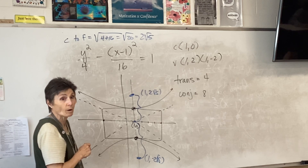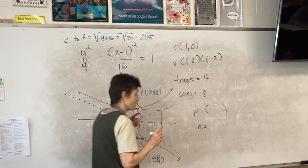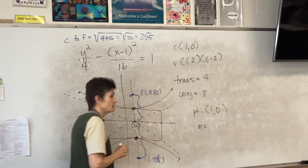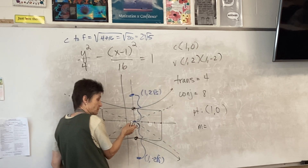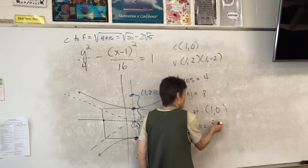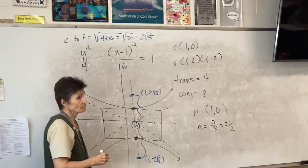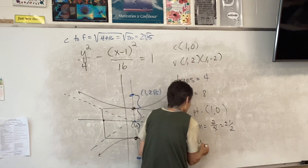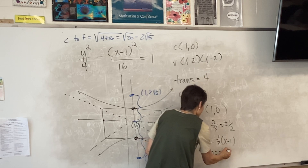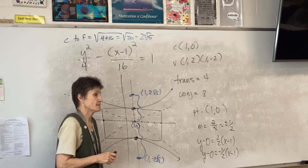Now we're ready for our asymptotes. We need a point and a slope. We agreed — use the center, so the point is one comma zero. What slope are we using? When you built the box, you went up two and over four, so your slope is two fourths, which we reduce to one half. There are two of them — plus or minus one half.